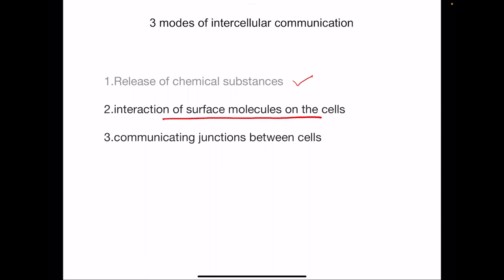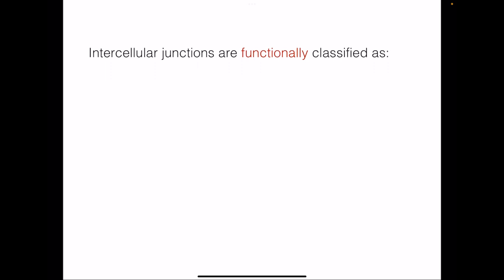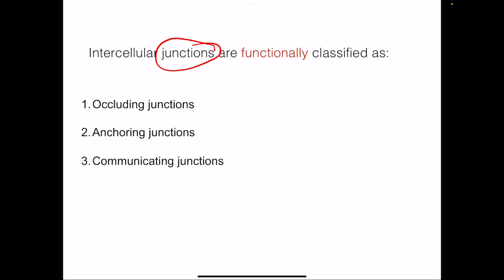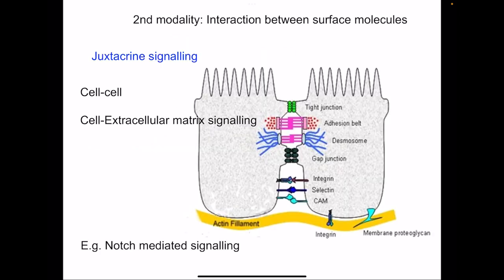The second mode is the interaction of surface molecules on cells. Cells are connected to each other by means of intercellular junctions, which are functionally classified as occluding junctions, anchoring junctions, and communicating junctions. These intercellular junctions, due to certain protein molecules and their attachment to cytoskeletal elements, can also act as communication — not only for adhering cells or holding them together, but also for changing cell functions. This kind of signaling is known as juxtacrine signaling.